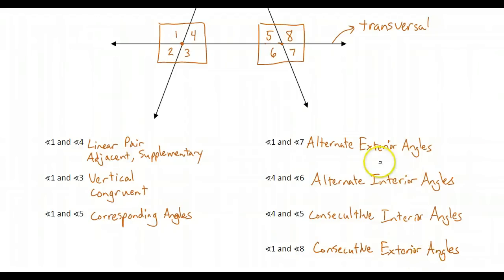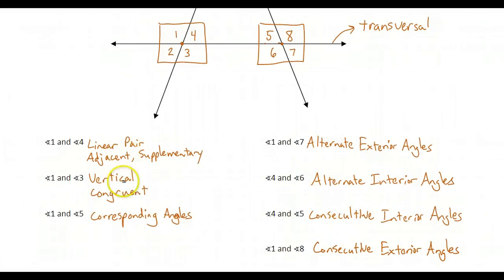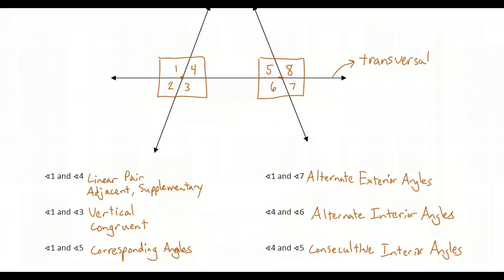So these are the four kinds of angles that we learned today, along with a couple other kinds of angles that we had from before. Make sure you understand how to identify all the different kinds of angles in this diagram.